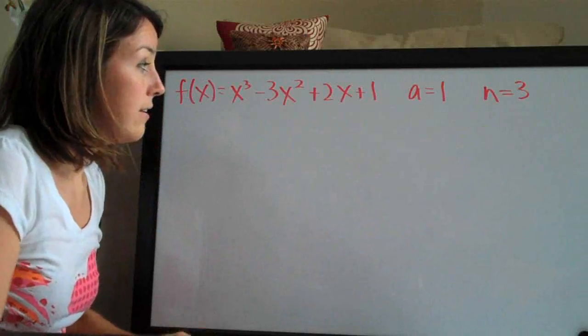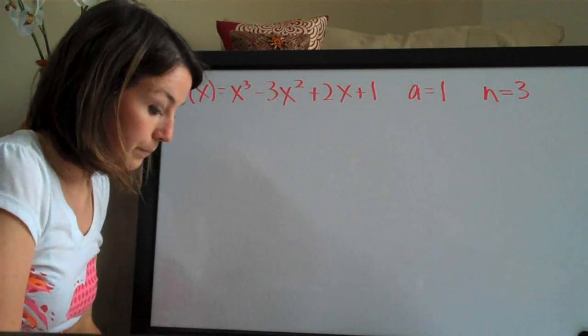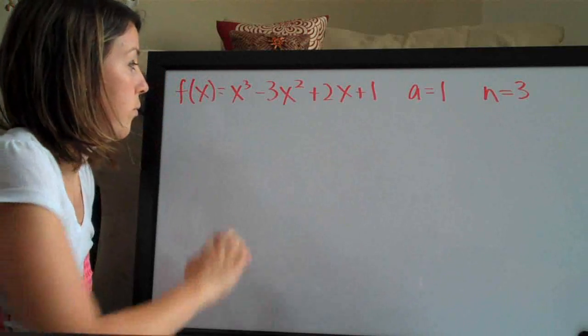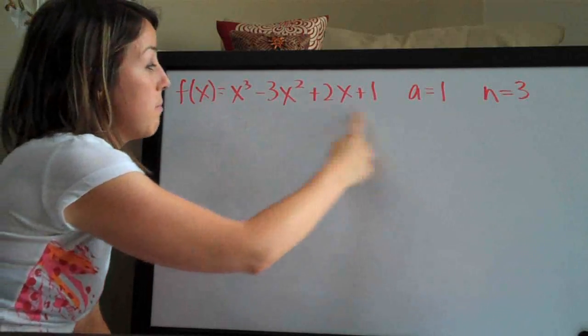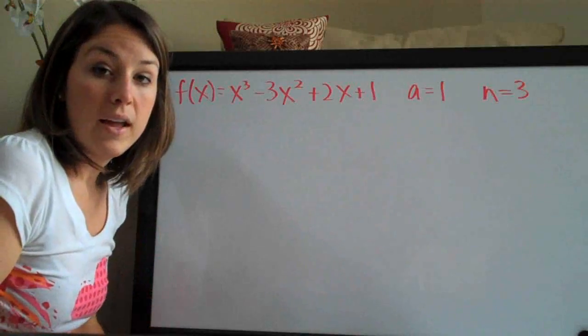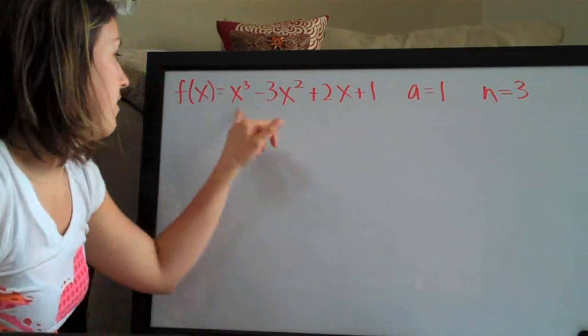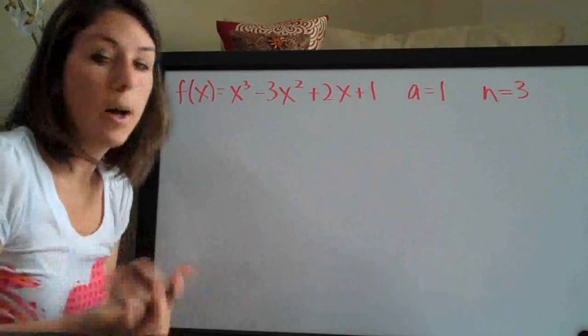So the easiest way - and Taylor polynomials just briefly as background - we're going to come up with a polynomial that essentially is the same thing as this function here but written in a different way. In this case this function is really simple so it doesn't really benefit us very much, but in more complex problems...